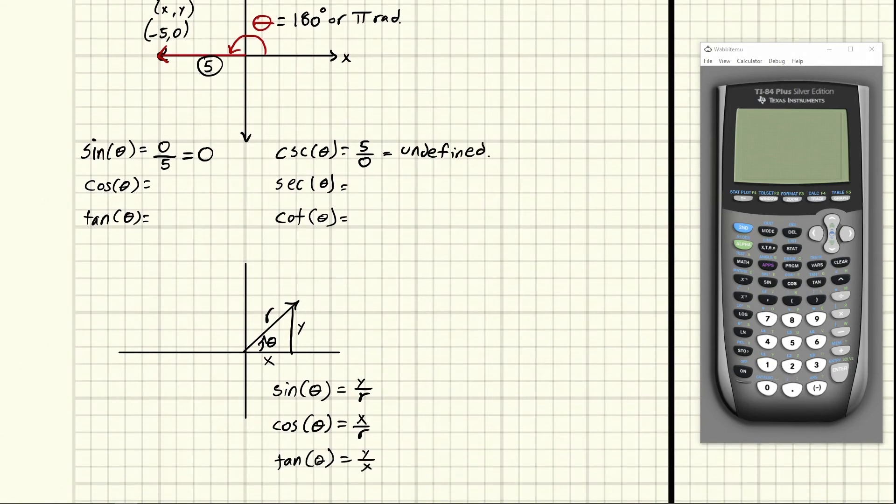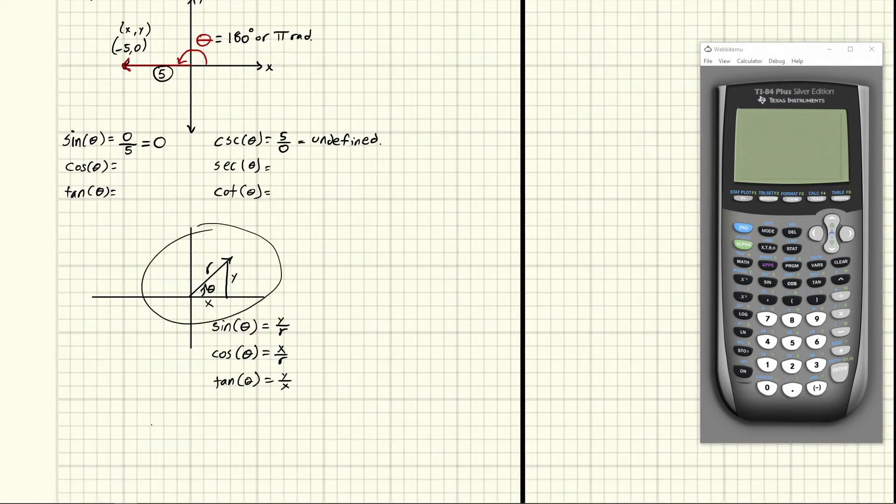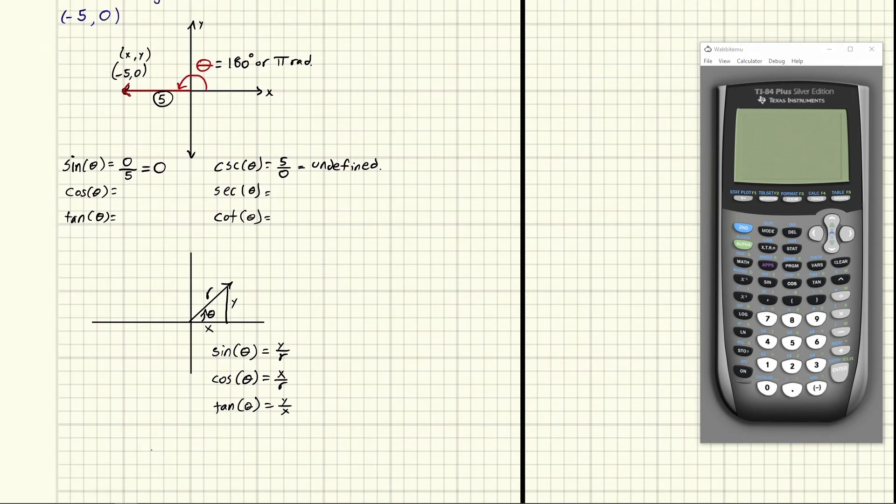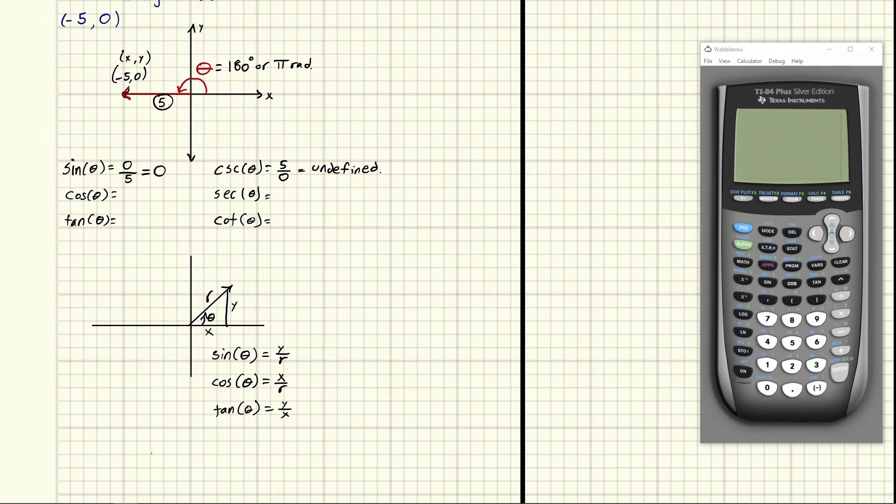And I like doing it this way. And if you can't remember just draw out this picture right here, because this way we can very easily see why things are the way they are. Why one is zero and the other is undefined. So now we're going to do cosine. Well that's going to be x over r. So x, well that's negative five. R is five. So we're going to get negative one. And if we flip it we're going to get five over negative five which will still be negative one.